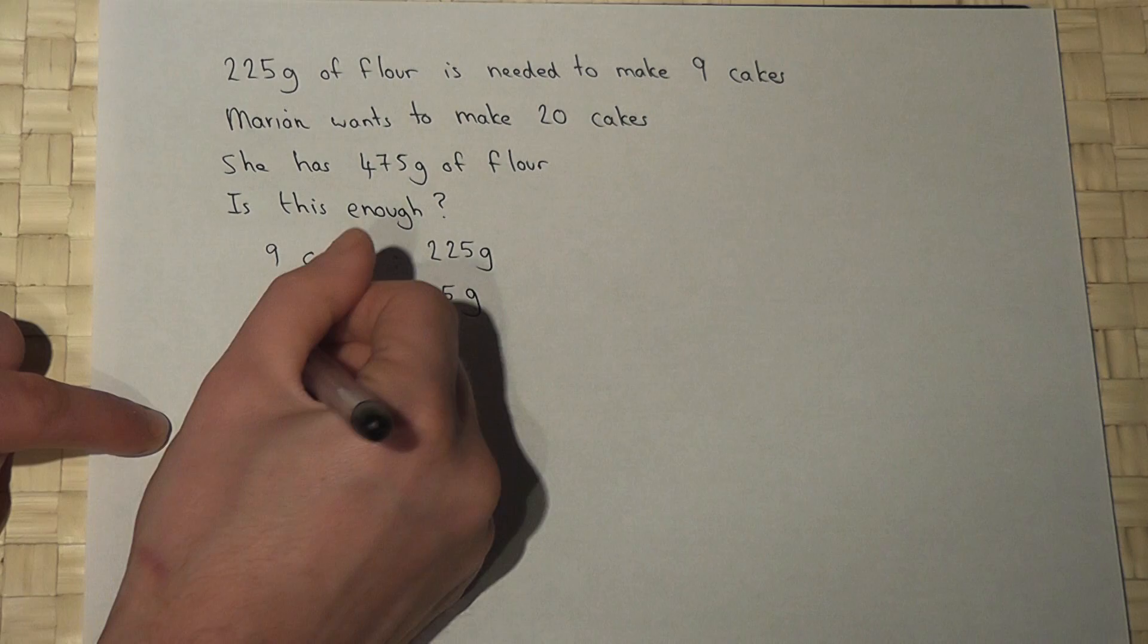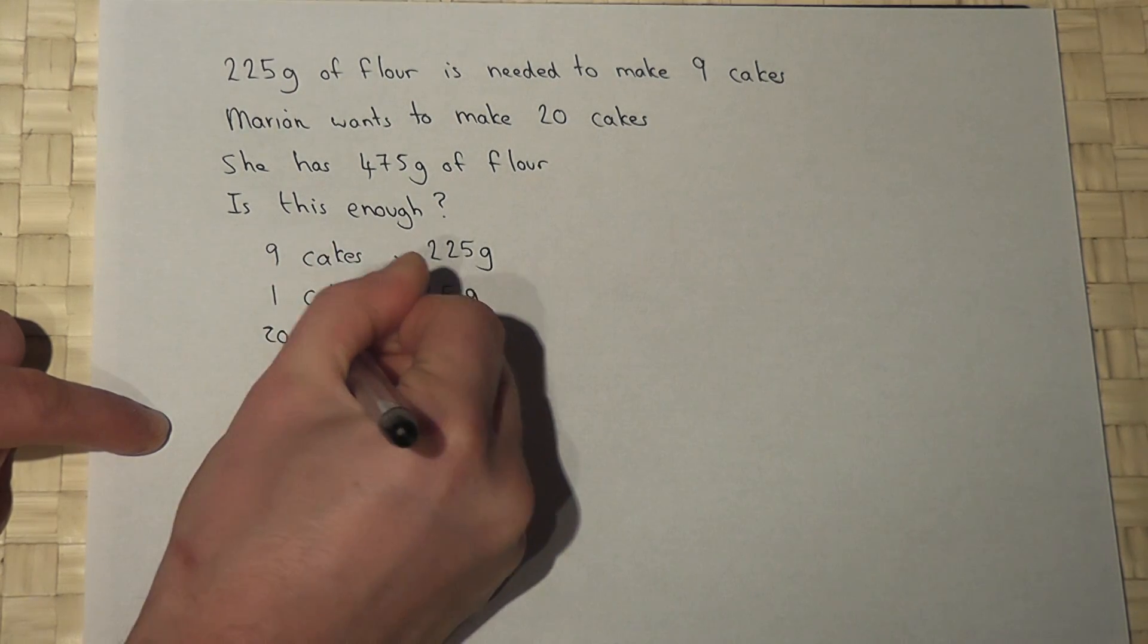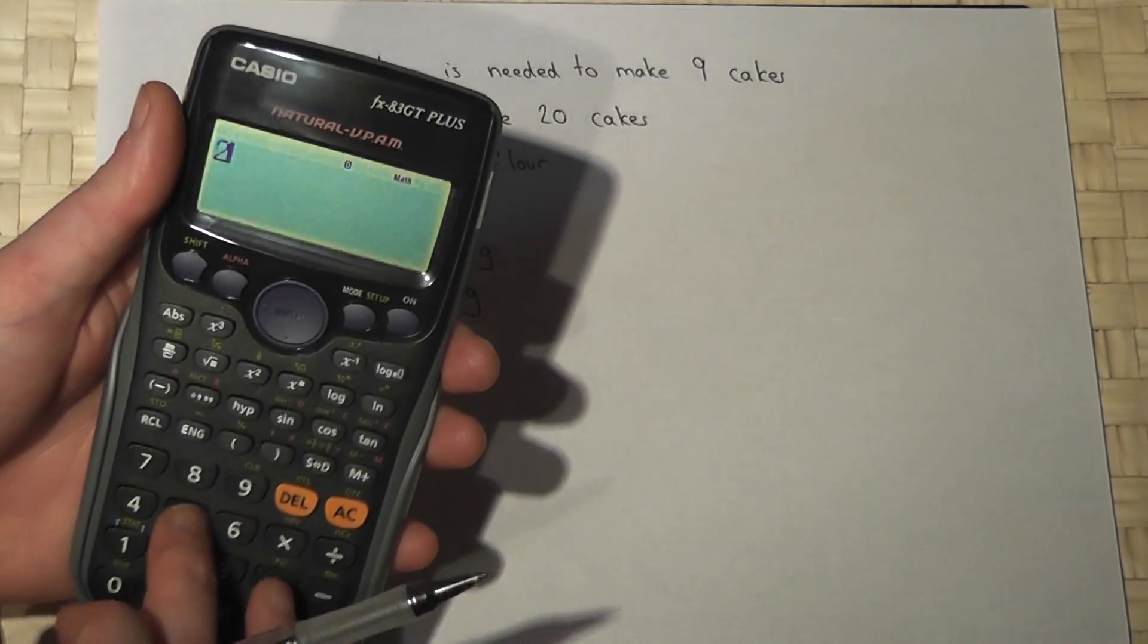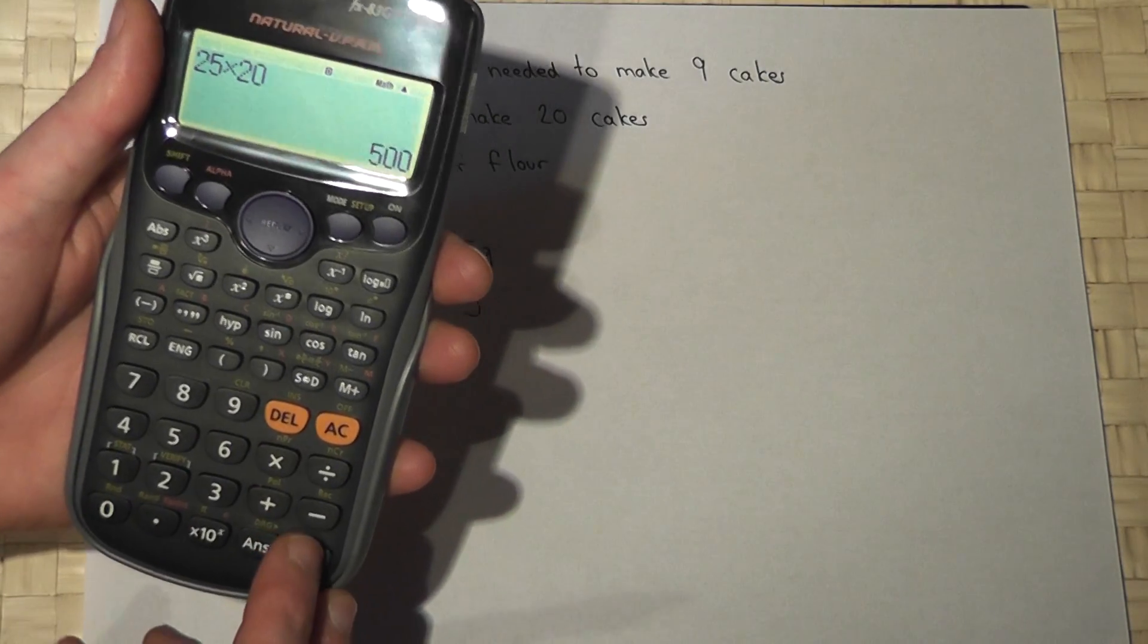So to make 20 cakes I then times this number by 20. So 25 times 20 is 500.